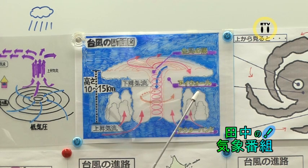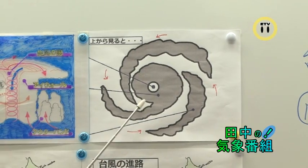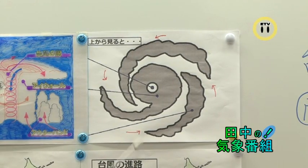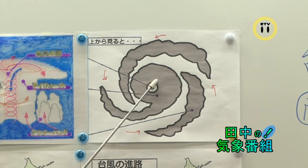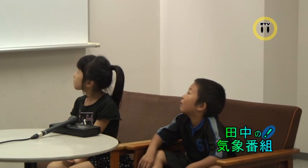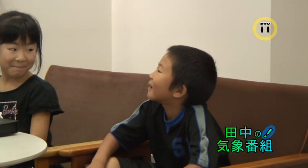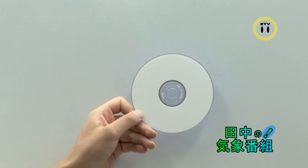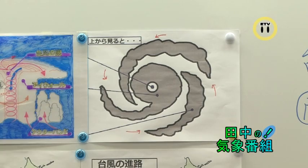これは台風を横から見た図です。台風は低気圧なので、たくさんの雲が集まっています。そして、この集まった雲がぐるぐると回転しています。そして、この台風を上から見ると、このような図になります。真ん中がぽっかりと空いています。これは雲がないところです。これを台風の目と言います。じゃあ、達也くんに質問です。これは何でしょうか？——DVDです。そうです。これはDVDです。じゃあ、このDVDをこの台風の図に重ねてみます。